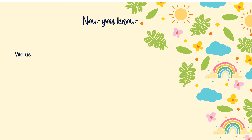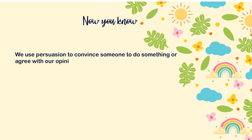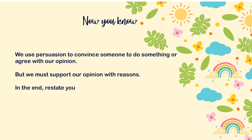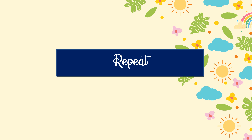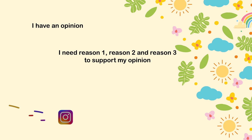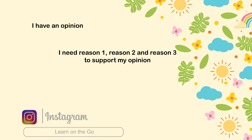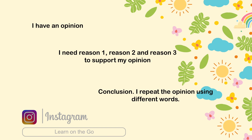You now know that we use persuasion to convince someone to do something, to believe in you, or to agree with our opinion — but we must support our opinion with reasons. In the end there has to be a conclusion where we repeat our opinion using different words. Are you ready to repeat the structure one more time? I have an opinion. I need reason one, reason two, and reason three to support my opinion. Conclusion — I repeat the opinion using different words.